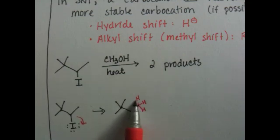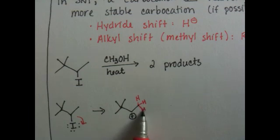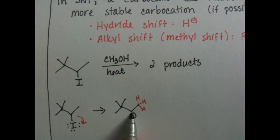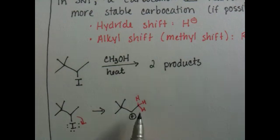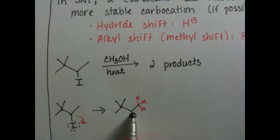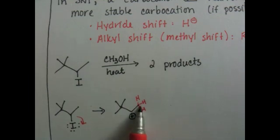This carbon over here has got three hydrogens on it. Technically, we could move one of those hydrogens as a hydride shift onto this particular carbon right there. That would resolve the positive charge here and put our positive charge up here. That's a primary carbon. Primary carbocations are really unstable. So we're not going to hydride shift from that end of the molecule because it makes a less stable carbocation.